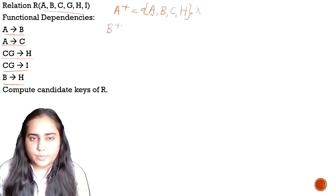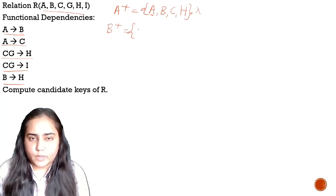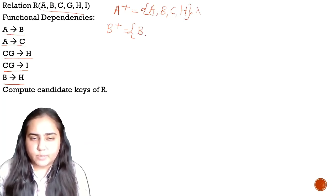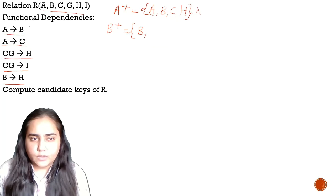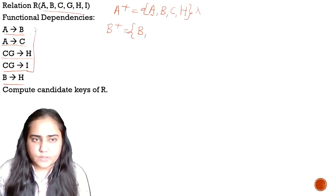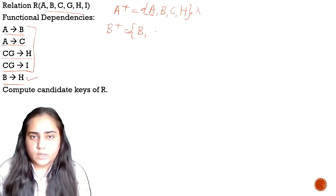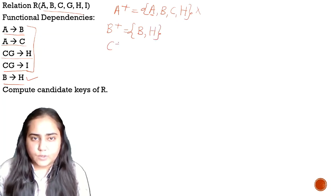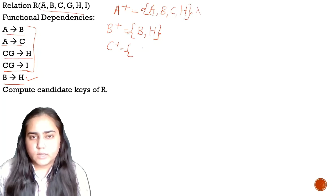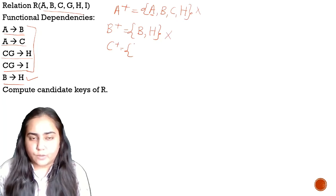Next we have B. So with B-plus, B itself will be part of the closure. You cannot add anything from the first five dependencies because the left-hand side is not B alone. But I can add H using B determines H. B-plus is just B and H. B is also not a candidate key — it does not have all the attributes.